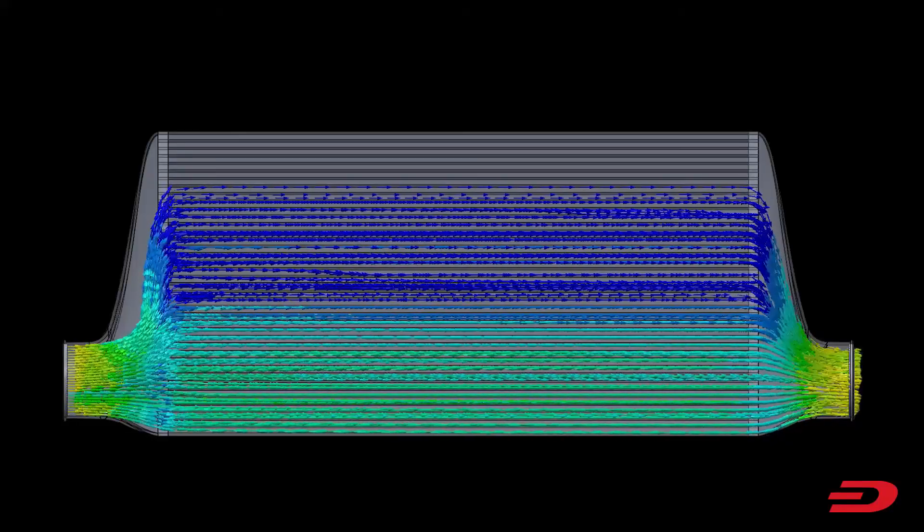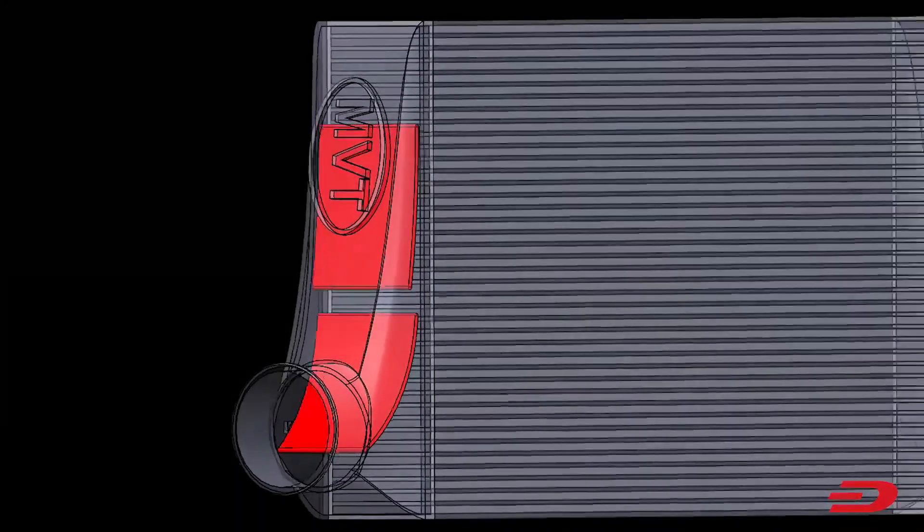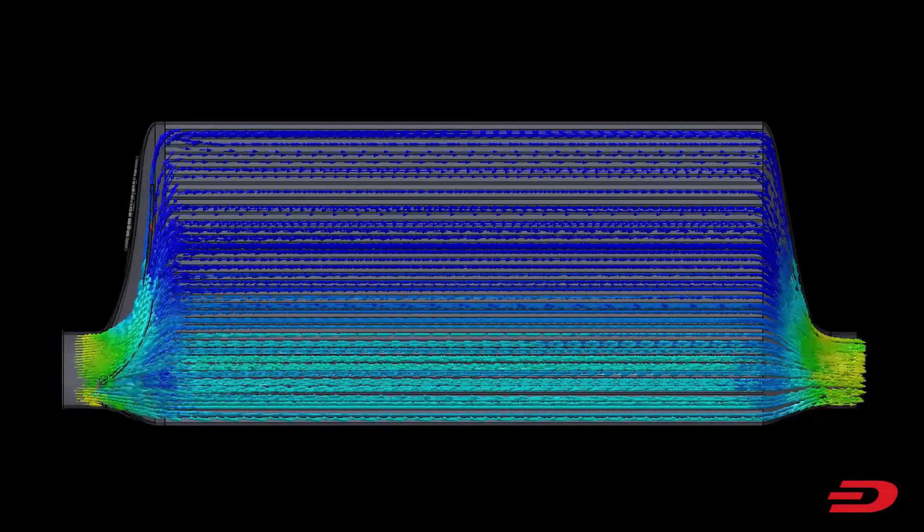This is solved by the last design we're going to look at, intercoolers that feature multi-vane technology. These are specially designed vanes located in the inlet tank that distribute the airflow evenly across the core.